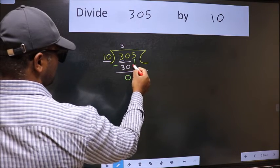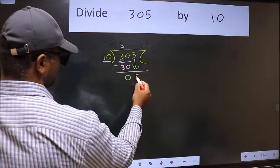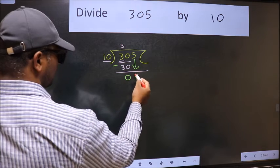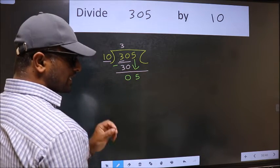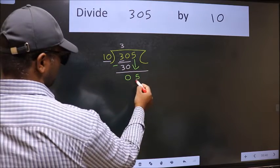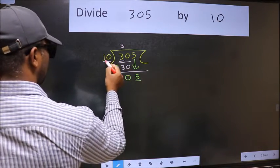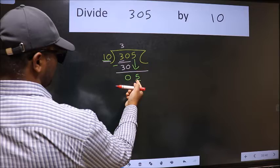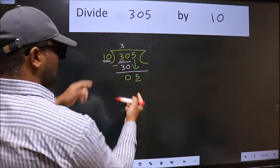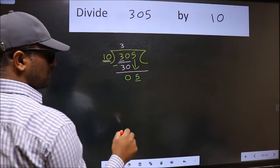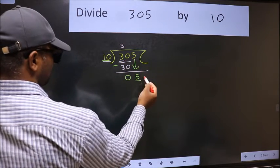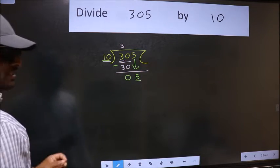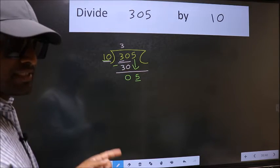After this, bring down the beside number, so 5 down. After this step, the mistake happens. And the mistake is this: here we have 5 and here 10. 5 is smaller than 10, so what many do is they directly put dot, take 0. Which is wrong.